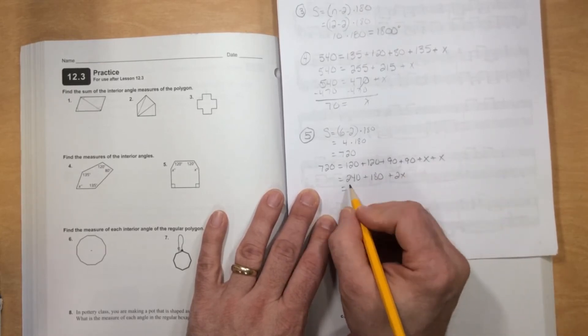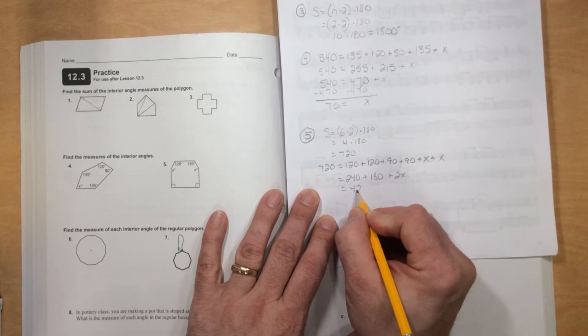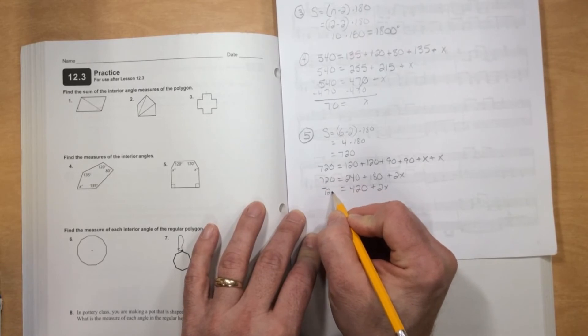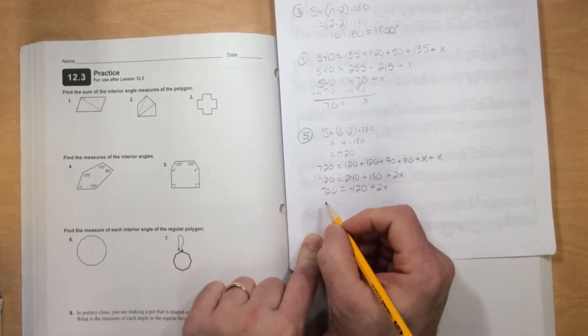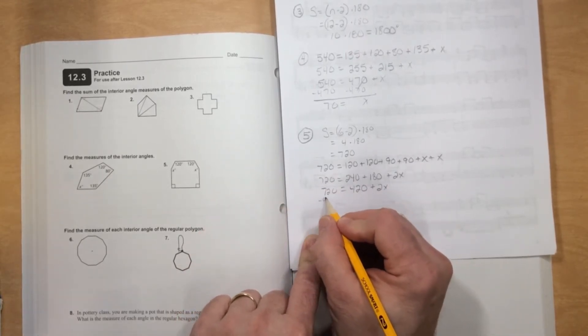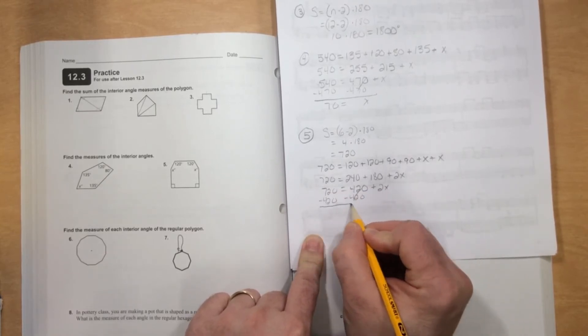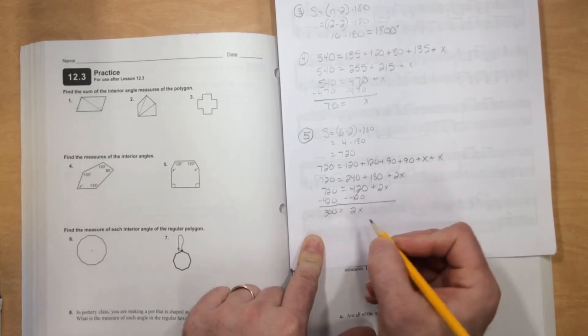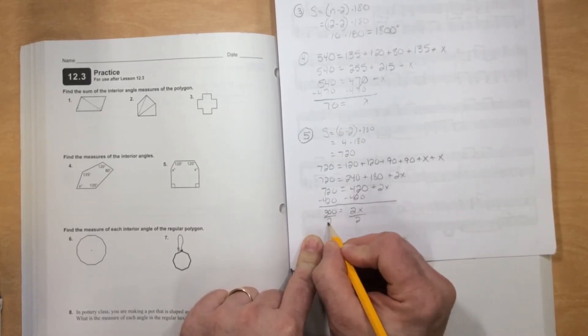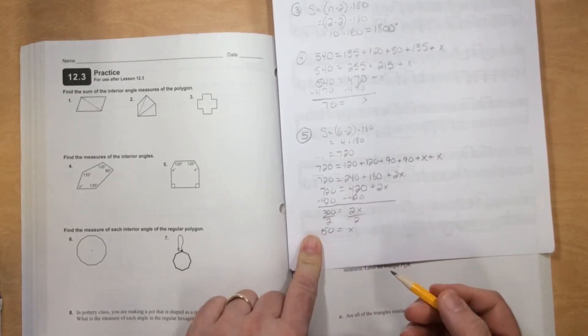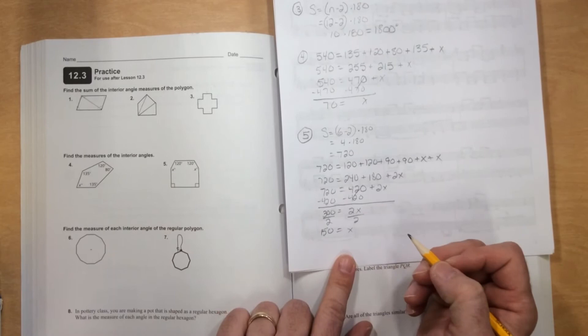Subtract 420 from each side and get 2X equals 300. Divide by 2, X equals 150. So X equals 150 for number 5.